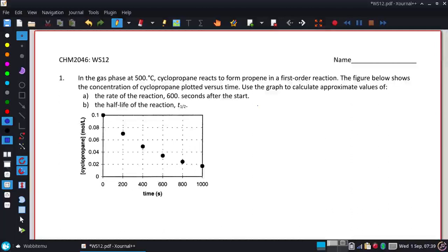All right, so we're looking at this first question. In the gas phase at 500 degrees Celsius, cyclopropane reacts to form propene in a first-order reaction. The figure below shows the concentration of cyclopropane plotted versus time.